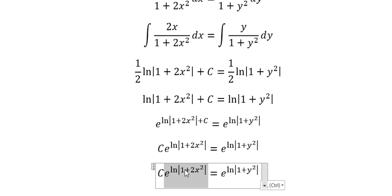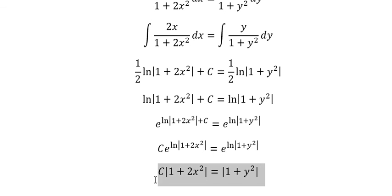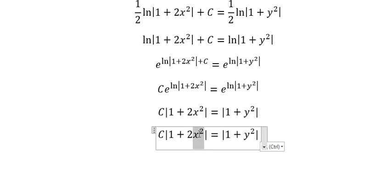This gives us the absolute value of (1 + 2x²) on the left and (1 + y²) on the right. Since x² and y² are always positive, both expressions are positive, so we can remove the absolute value signs.